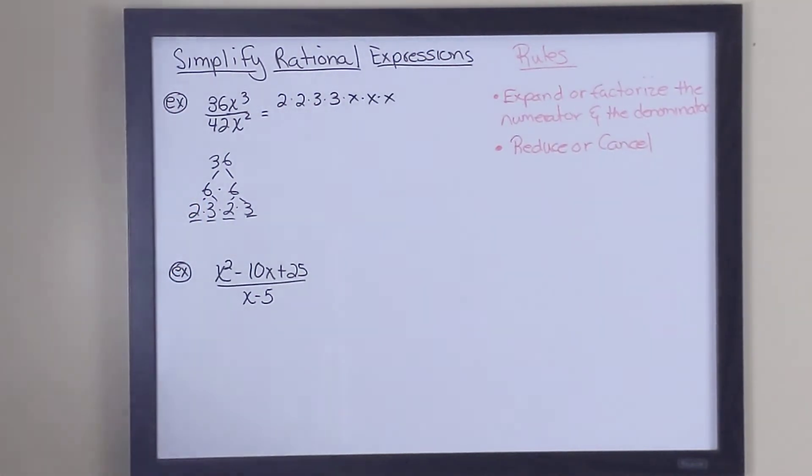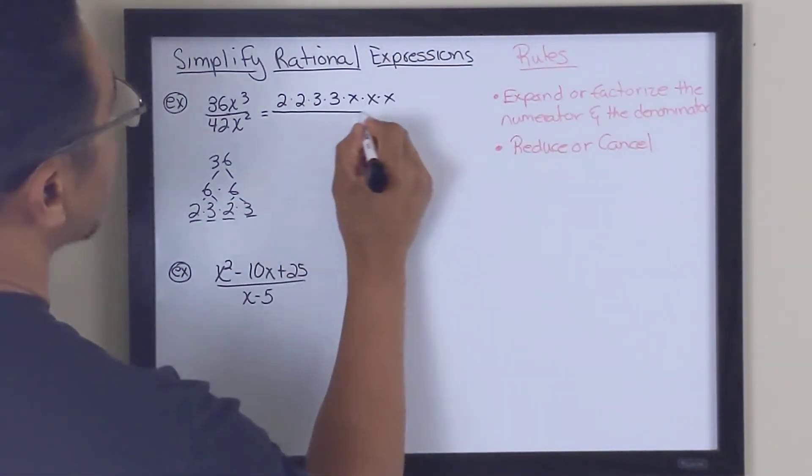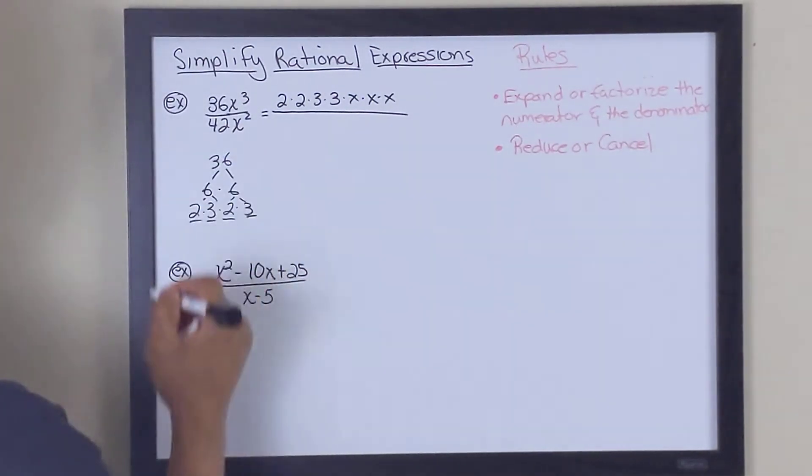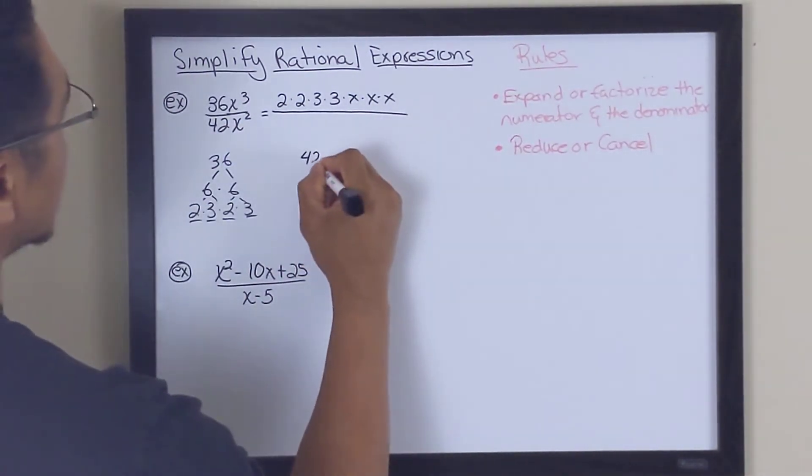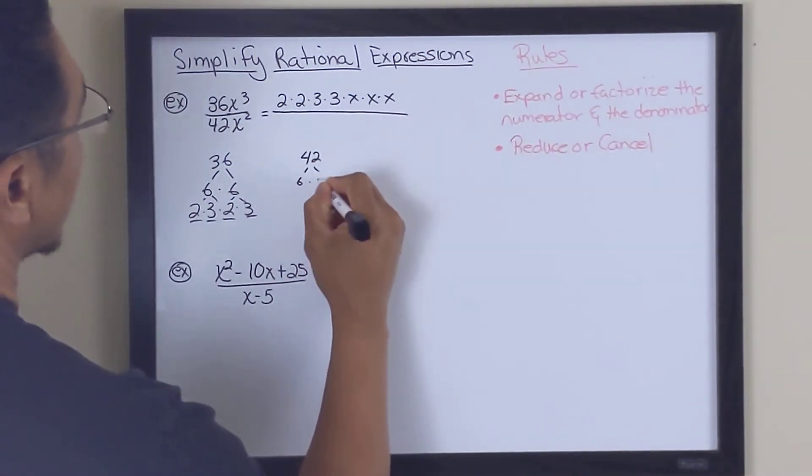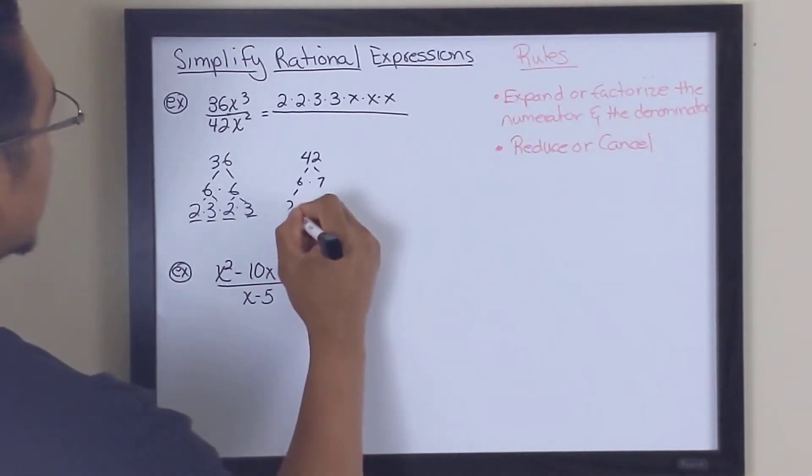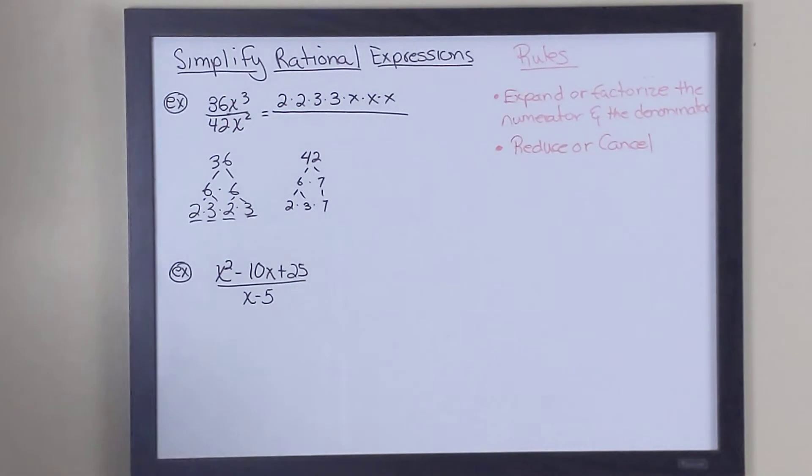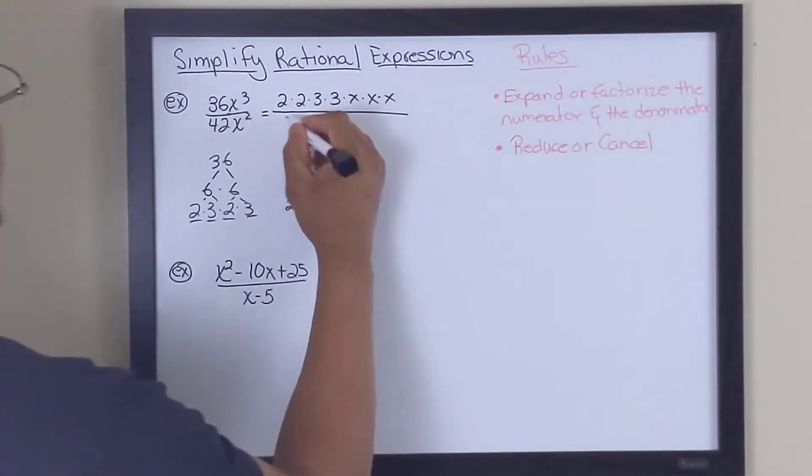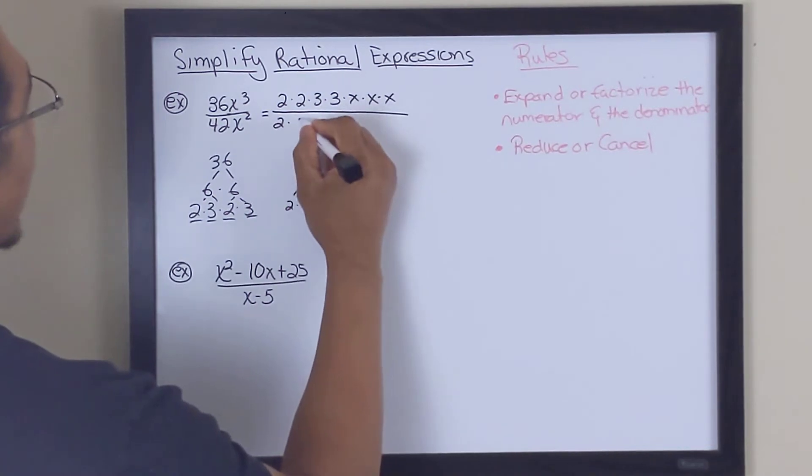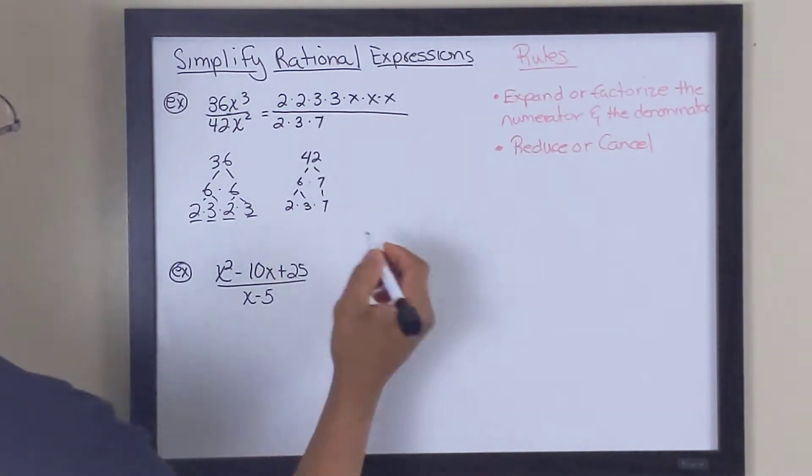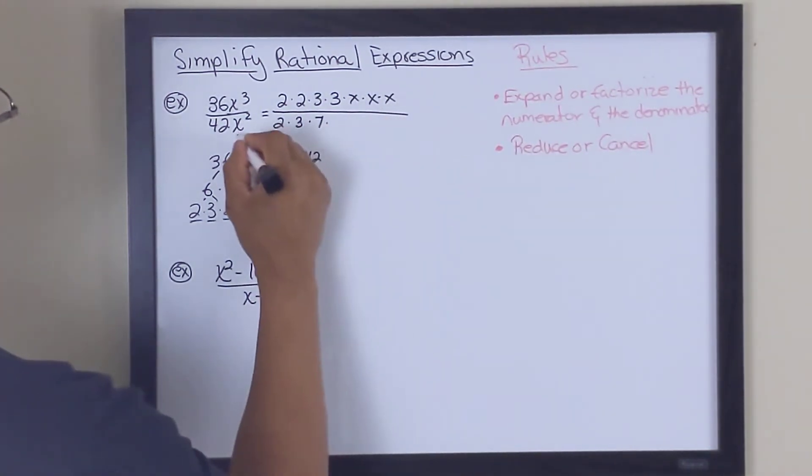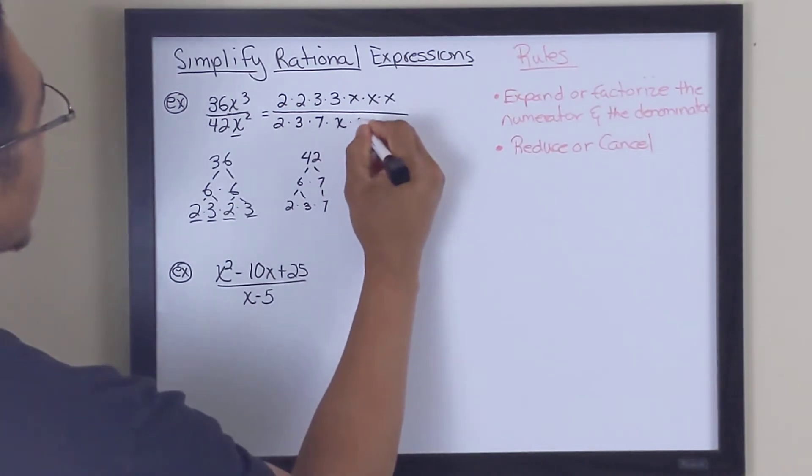We're going to do the same thing with the denominator. So now we're going to expand the denominator, which is 42. So let's go ahead and break 42 down. That would be 6 times 7. This would be 2 times 3. And of course, 7, you can't break that down anymore, so it stays as 7. So the denominator becomes 2 times 3 times 7. And of course, x squared becomes x times x.